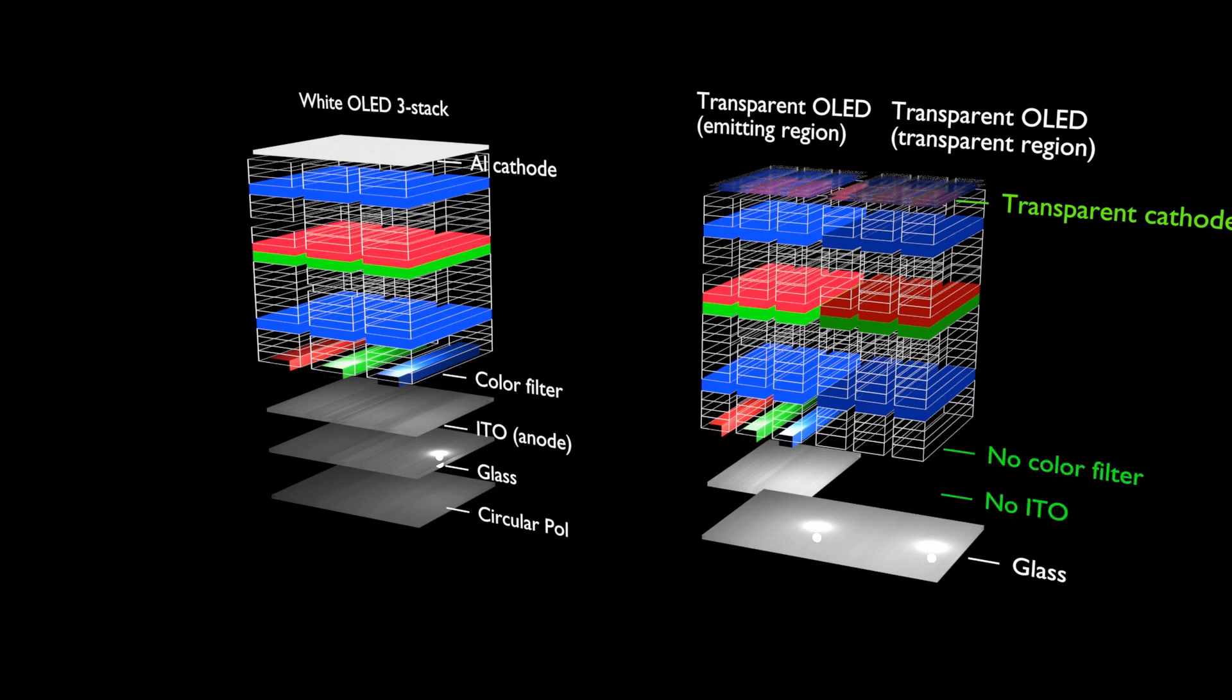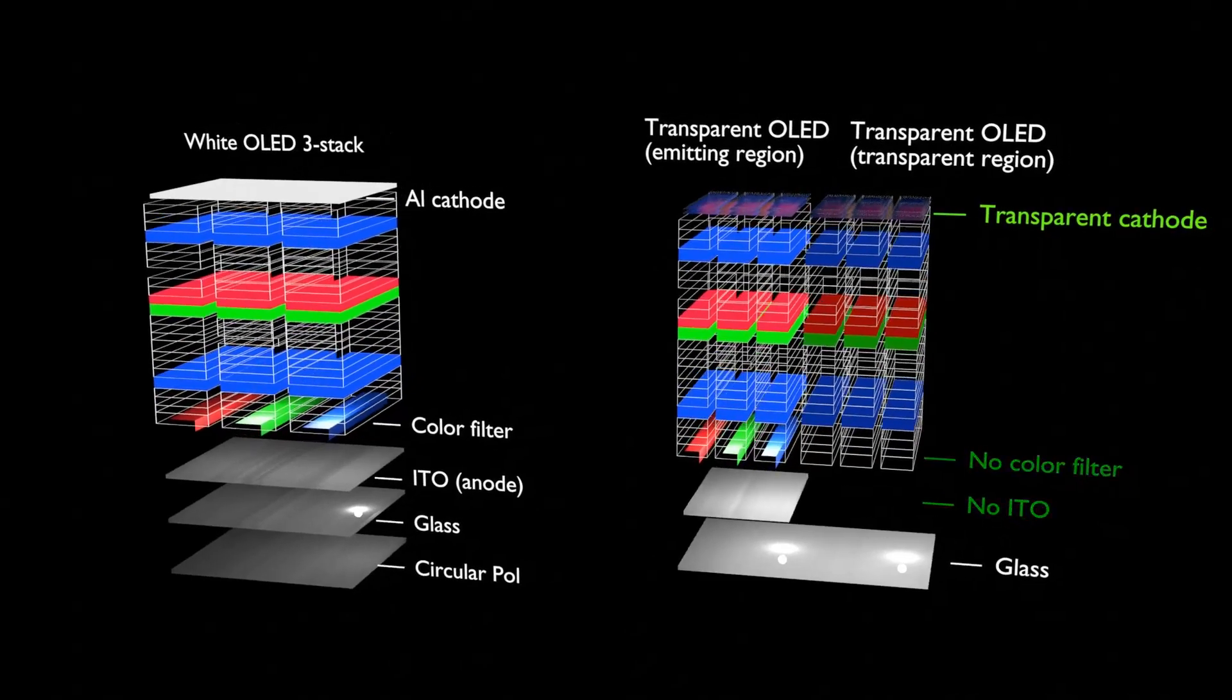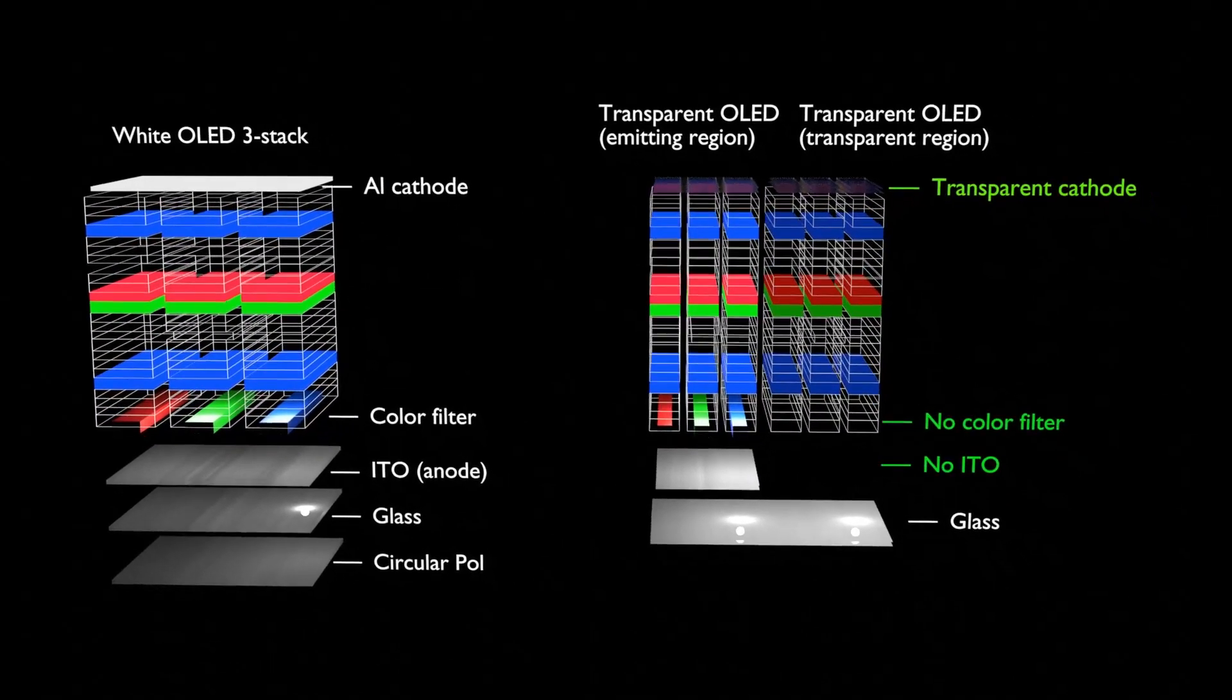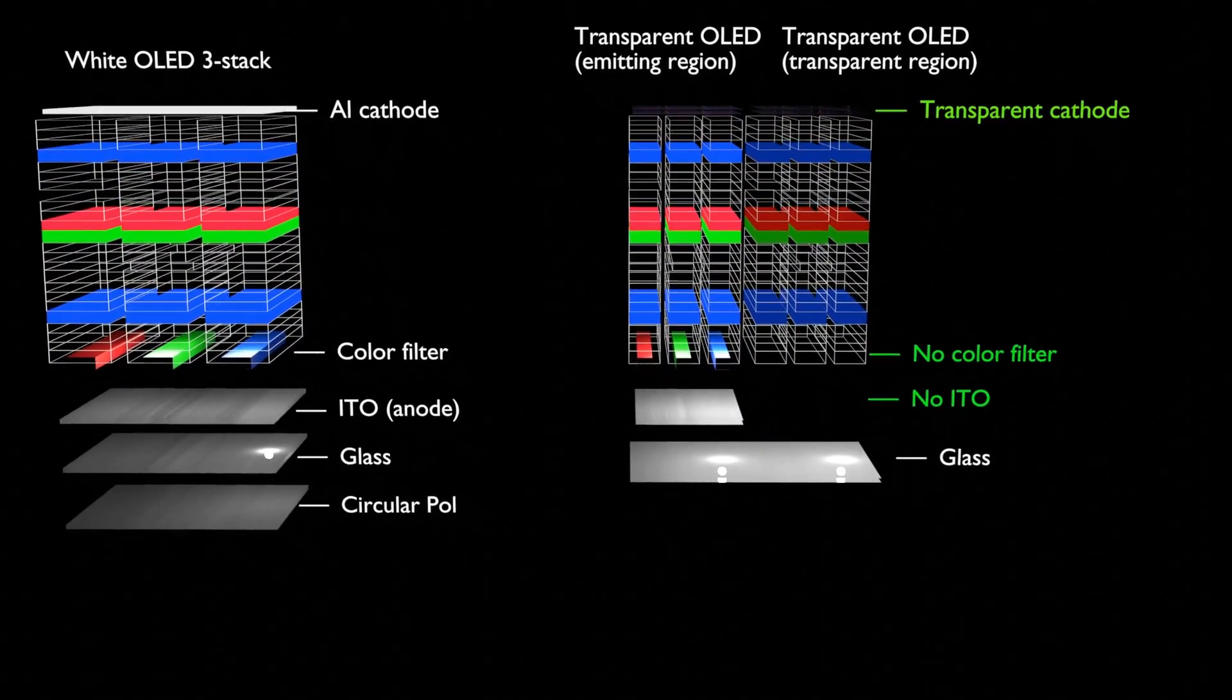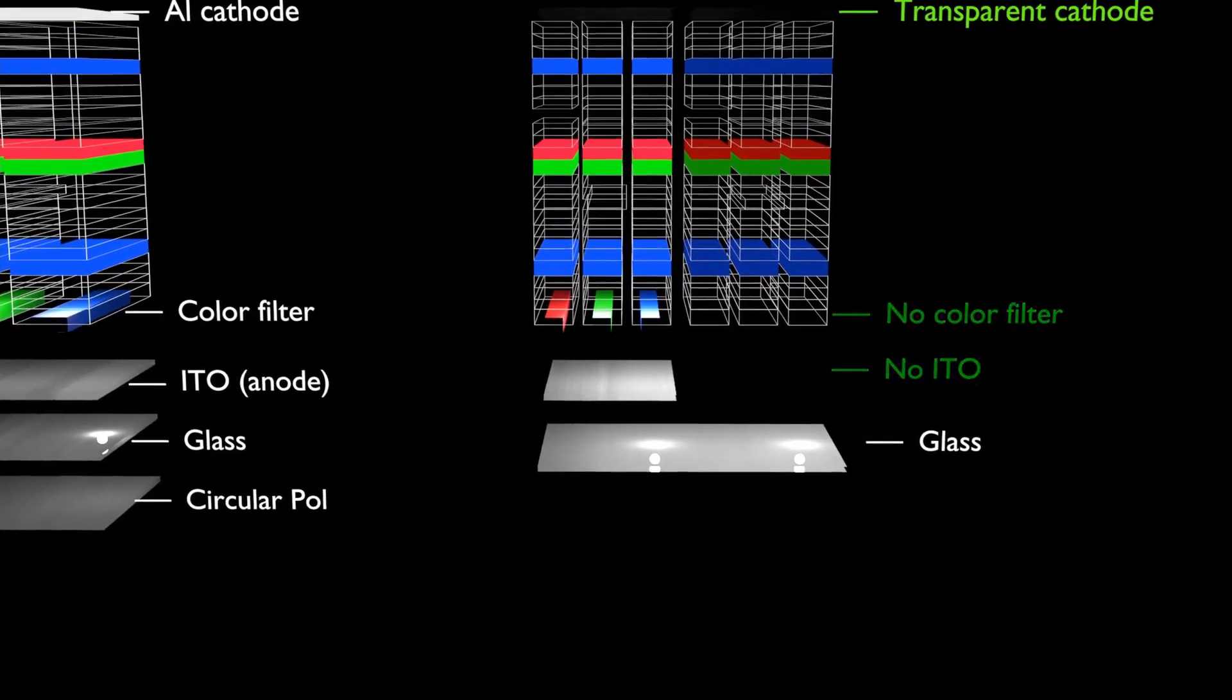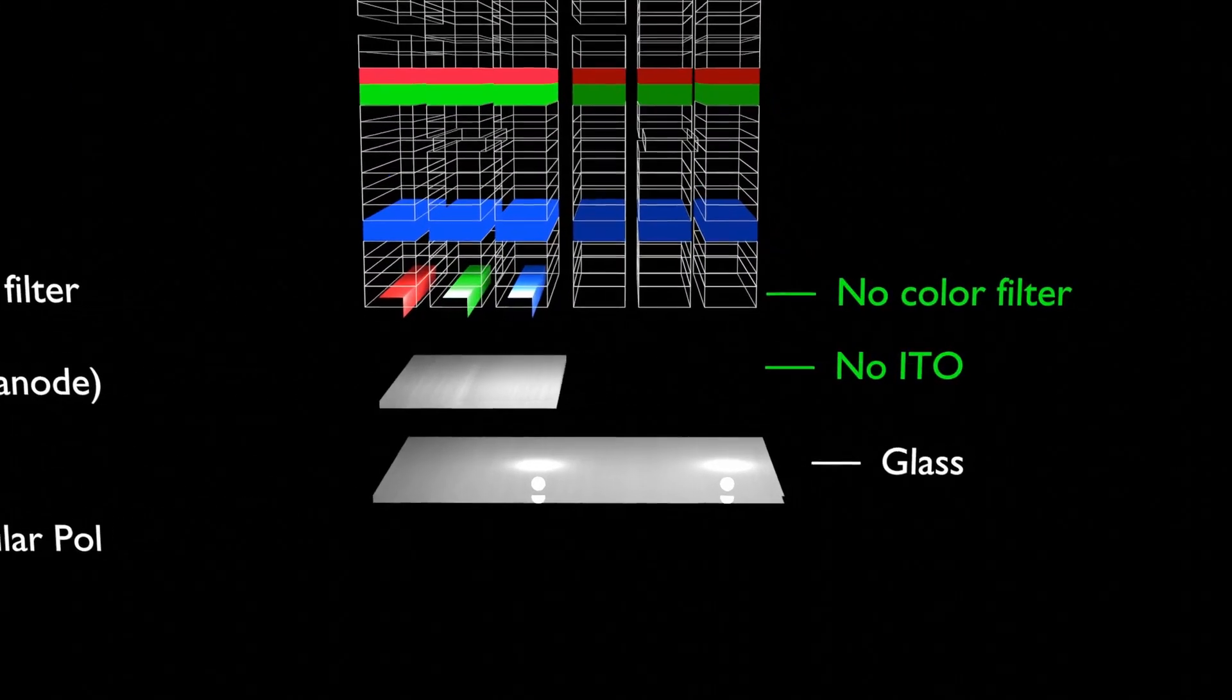However, before the deposition process, the ITO anode and color filter produced by the photoprocess are processed so that they are not formed in the area that does not emit light without a separate additional process, so the ITO electrode and color filter do not remain in the transparent area.